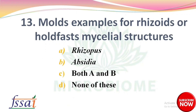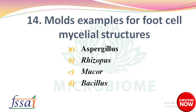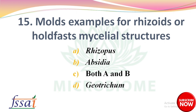Next: Molds — example for rhizoids or root-like mycelial structures — options: Rhizopus, Absidia, both A and B, none of these. The right answer is option C, both A and B, Rhizopus and Absidia. Next: Molds — example for food cell mycelial structures — options: Aspergillus, Rhizopus, Mucor, Bacillus. The right answer is option A, Aspergillus.